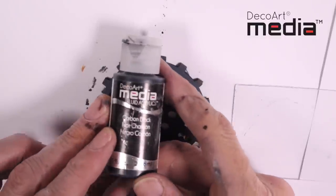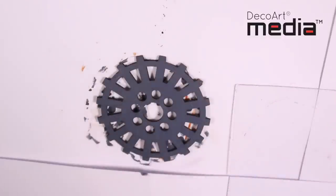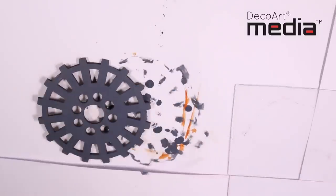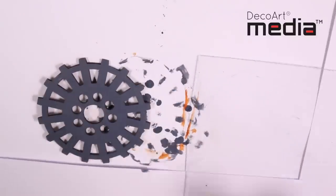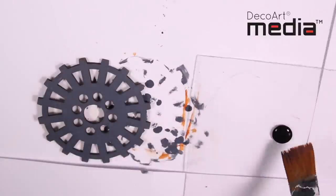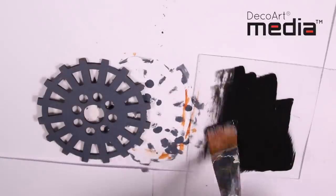Next colour is Carbon Black. I'm going to pour a small amount of fluid acrylic onto a piece of Perspex. And then, using a soft brush, I'm going to spread the paint out thin.